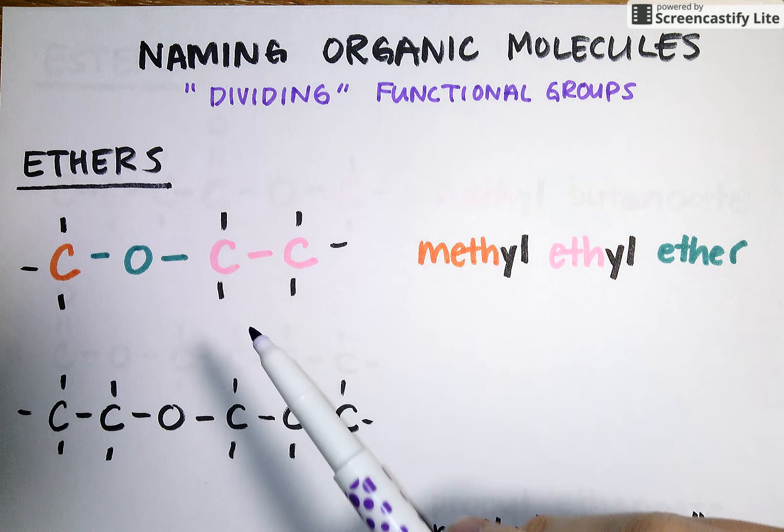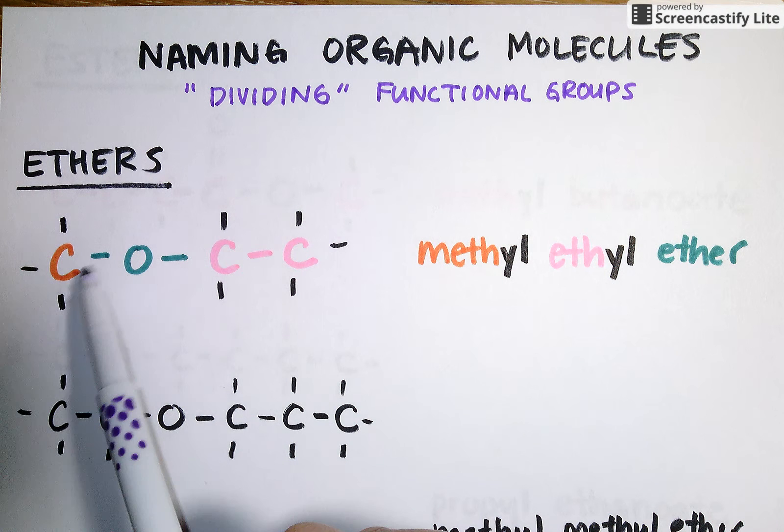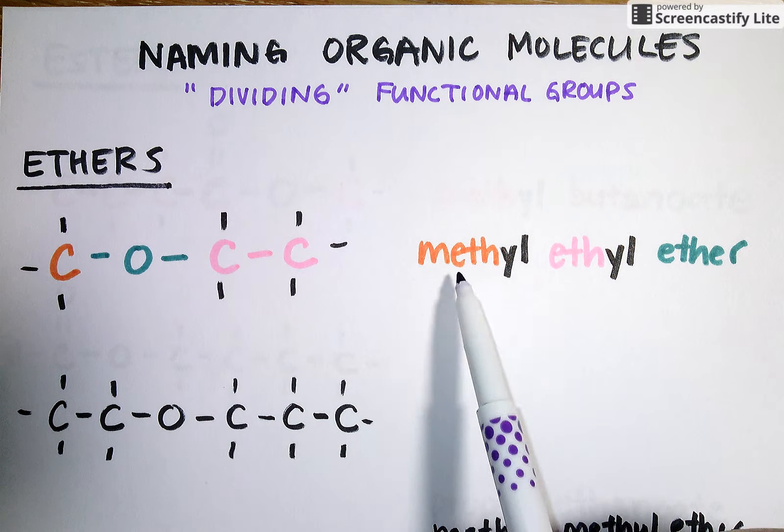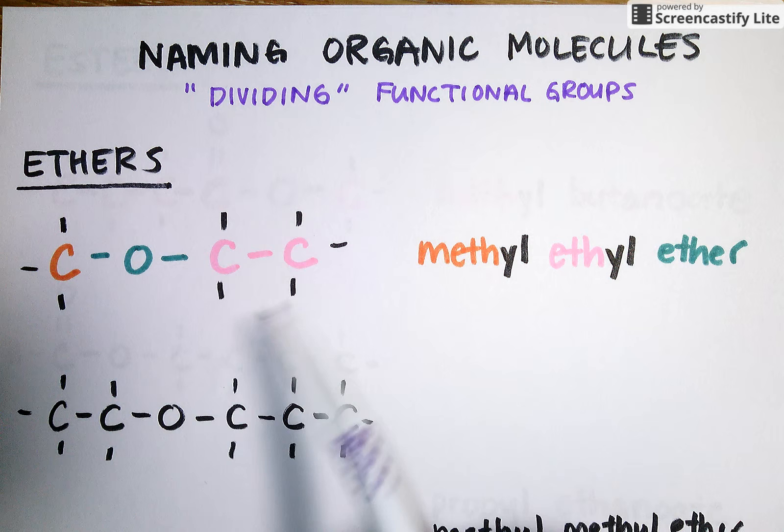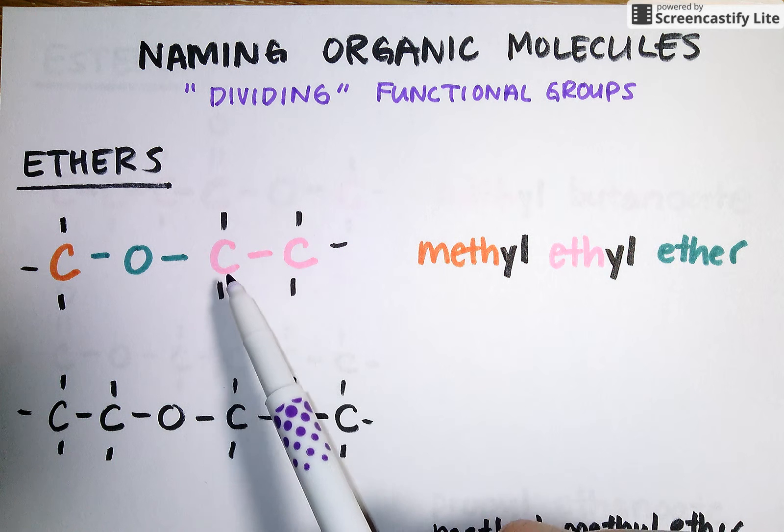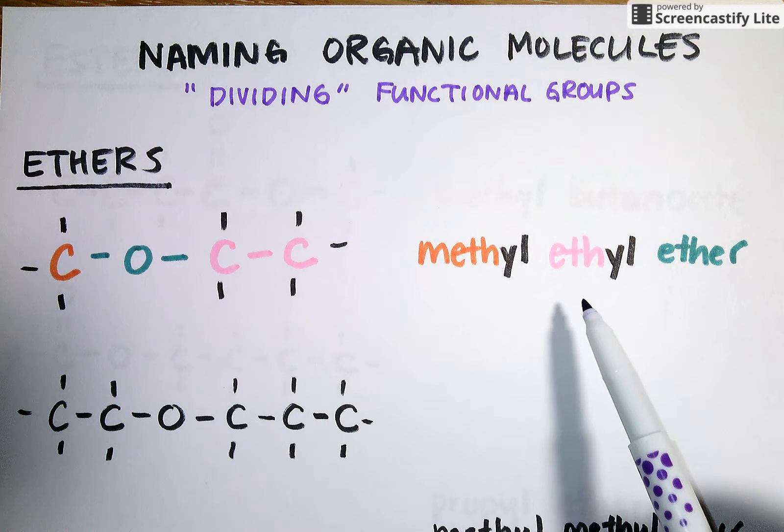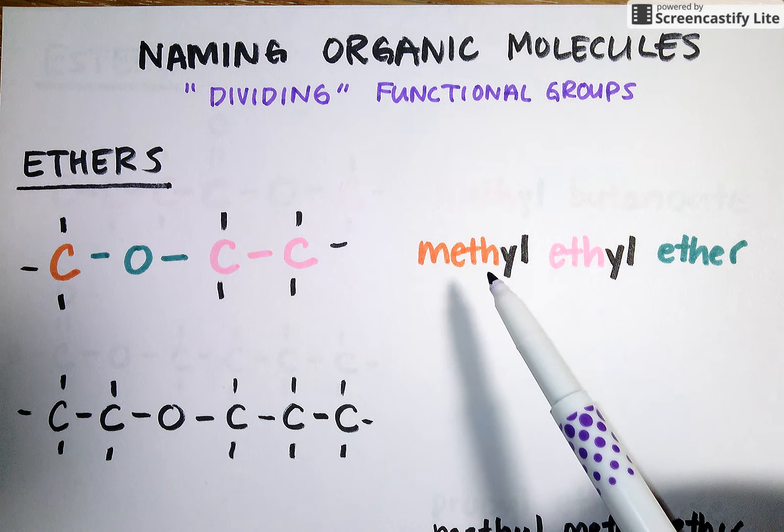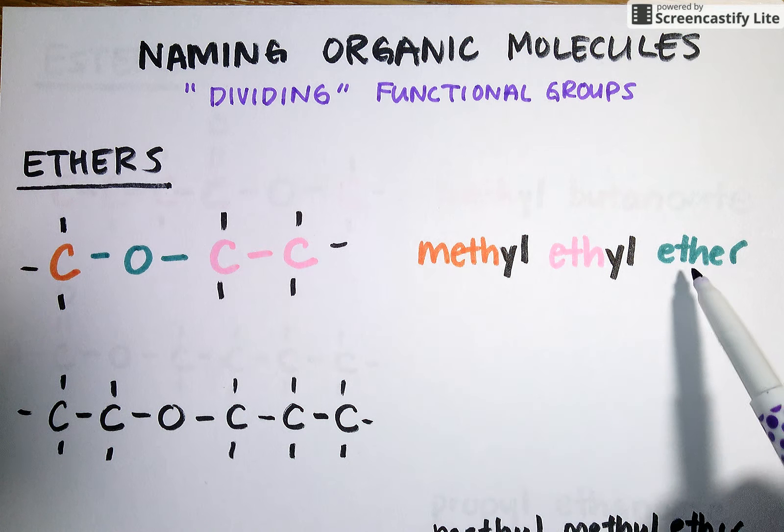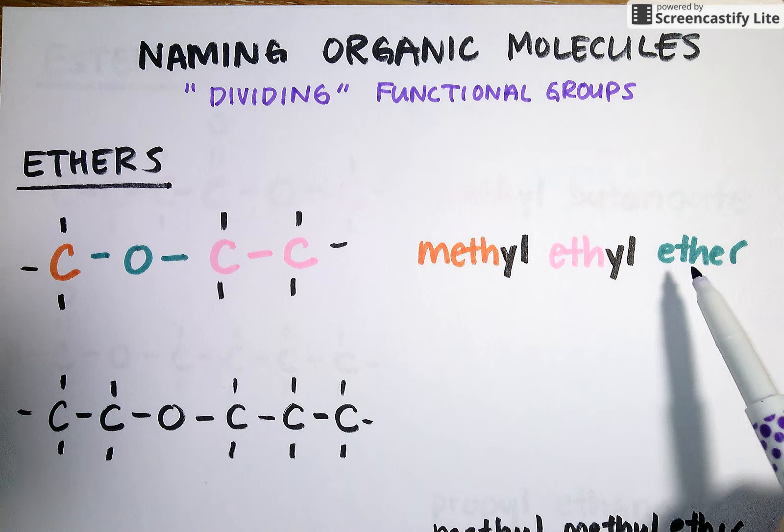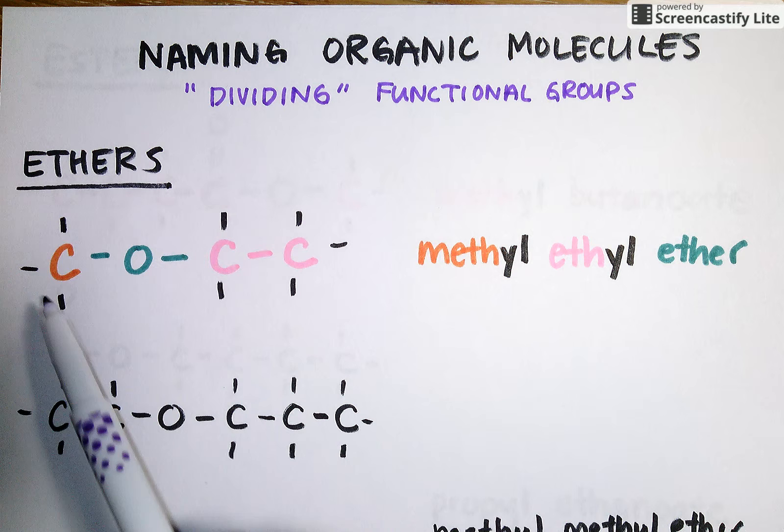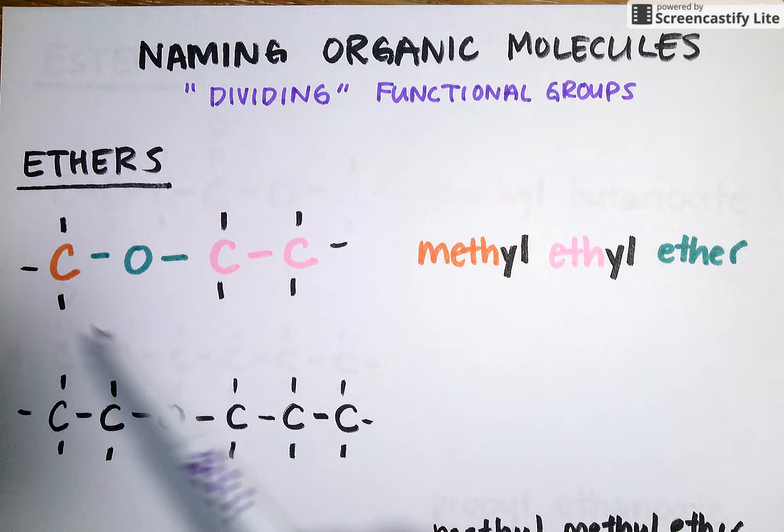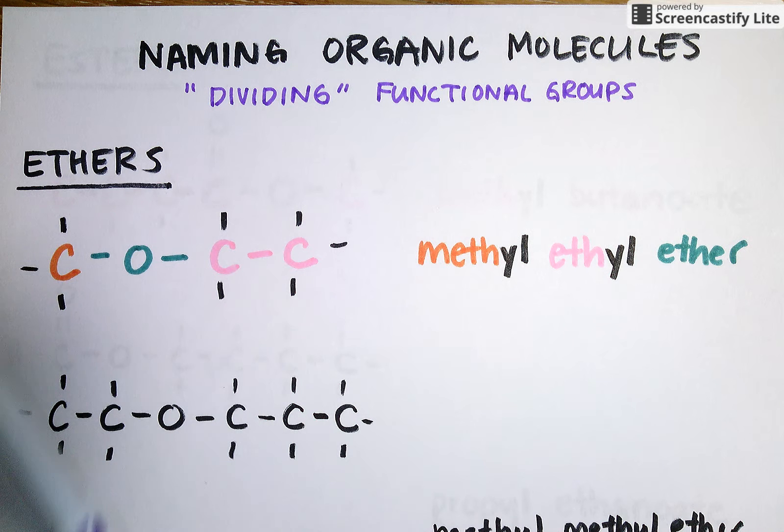When I'm naming this particular compound, to the left of the oxygen, I had a one-carbon chain, so I used the prefix meth. I stuck a yl ending onto these two prefixes to show that they're attachments to the ether functional group, and that's how I'm going to round off my name. Methyl from the orange, ethyl from the pink, and ether because it has that green ether functional group.